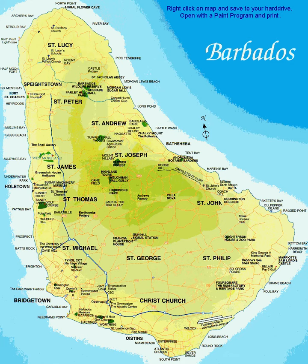Barbados is also host to the green monkey. The green monkey is found in West Africa from Senegal to the Volta River. It has been introduced to the Cape Verde Islands off northwestern Africa, and the West Indian islands of Saint Kitts, Nevis, St. Martin, and Barbados. It was introduced to the West Indies in the late 17th century when trade ships traveled to the Caribbean from West Africa.